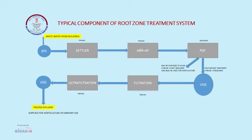This is the systematic diagram. You can see that wastewater comes from the building, goes to the SPS, then to the settler, ABR, anaerobic filters, PGF, then underground sumps, filtration, ultrafiltration, and finally to an underground sump from where it can be discharged for various purposes. We can directly discharge to rivers, or reuse for the flushing system, or reuse for horticulture purposes. All these components can be decided based on the reuse of the effluent.